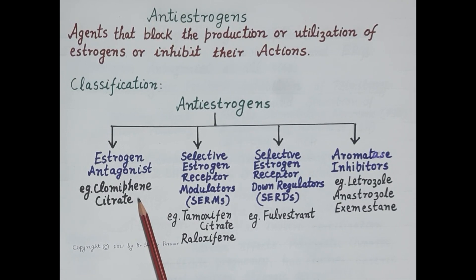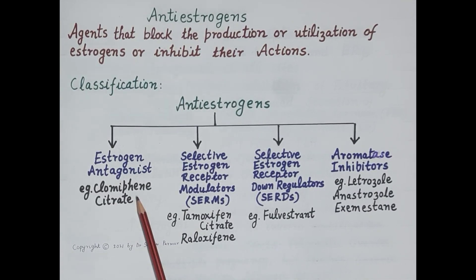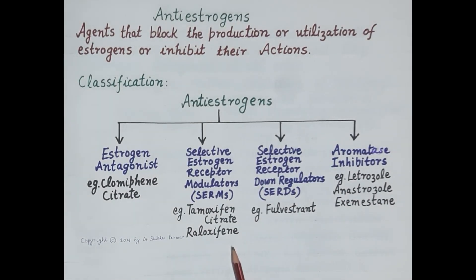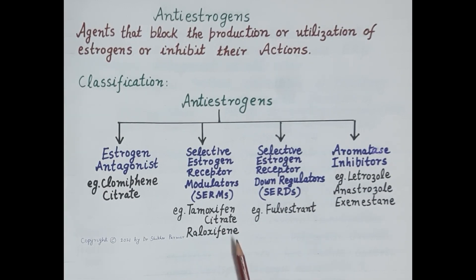Thus anterior pituitary is stimulated, causing excessive release and rise in levels of follicle stimulating hormone (FSH) and luteinizing hormone (LH). Increased FSH and LH induce ovulation, and thus clomiphene citrate is used in the treatment of infertility. The second category of anti-estrogens are selective estrogen receptor modulators — for example, tamoxifen citrate and raloxifen.